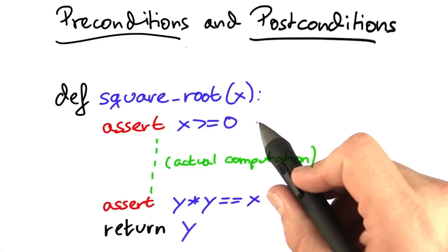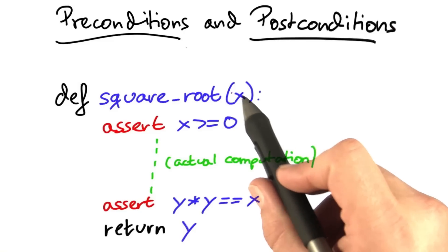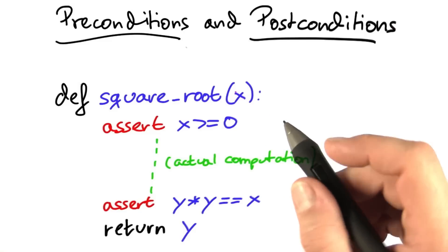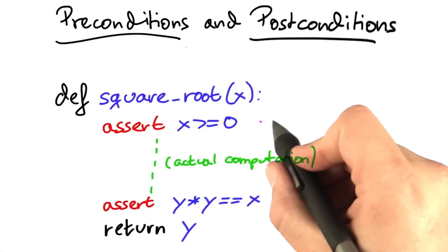How do we do that? Well, we square the square root and check whether it's identical to the original argument x. These two kinds of assertions form a pair, and both of them have very specific objectives.